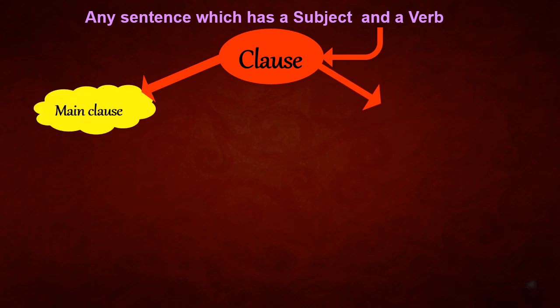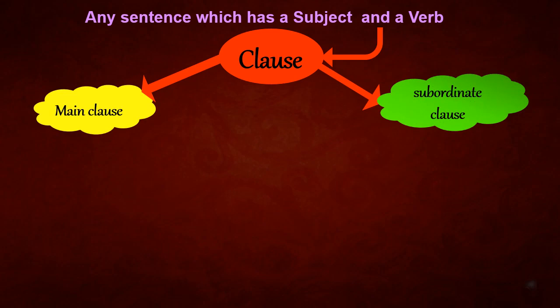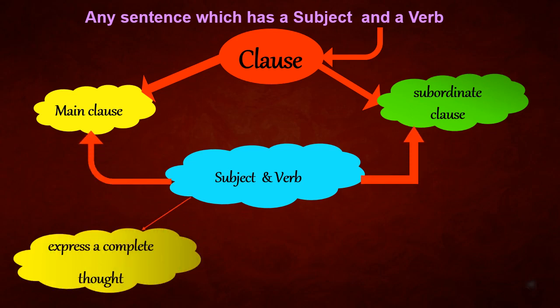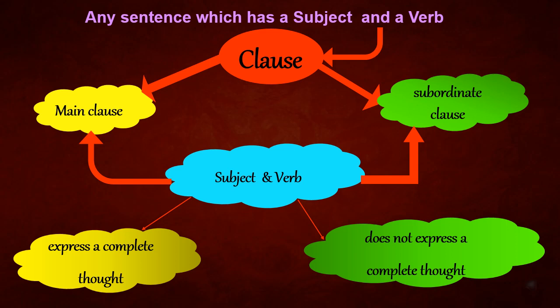There are two clauses. One is the main clause, the other one is the subordinate clause. What is a main clause? Subject and a verb. Subordinate as well as the main clause will have a subject and the verb. But if the subject and the verb express a complete thought, then you call it as a main clause. If it does not express a complete thought, then you call it as a subordinate clause.